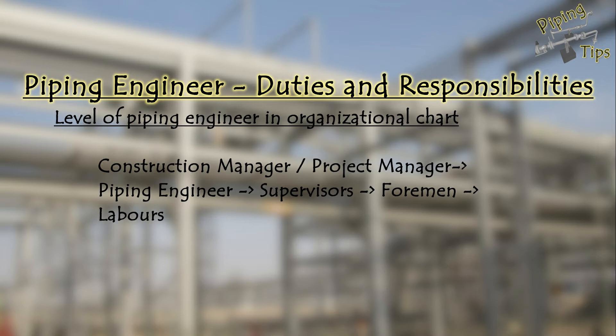It all depends on the companies. Some companies may have all these positions. Some smaller companies may have laborers directly under the piping engineers. And if it is a bigger organization, there may be additional posts like lead supervisor, general foreman, and the like. There may be more piping engineers if the work volume or project volume is big. Sometimes these piping engineers may be termed as mechanical engineers doing piping activities and other mechanical activities like structure work as well.